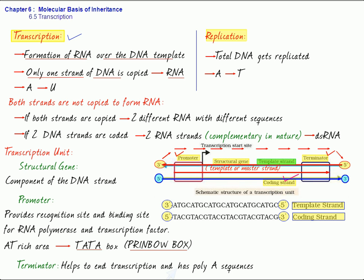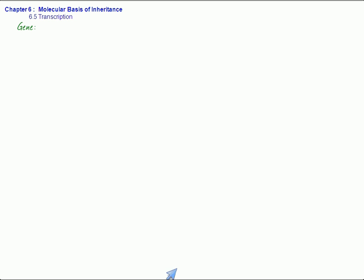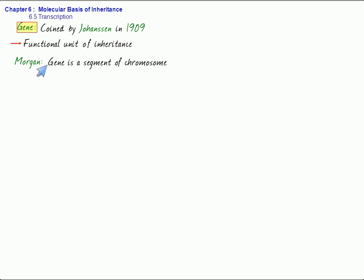Now, let's talk about a gene. The term gene was coined by Johansson in 1909, and according to him, gene is an elementary unit of inheritance that can be assigned to a particular character. In other words, it is also said to be a functional unit of inheritance.